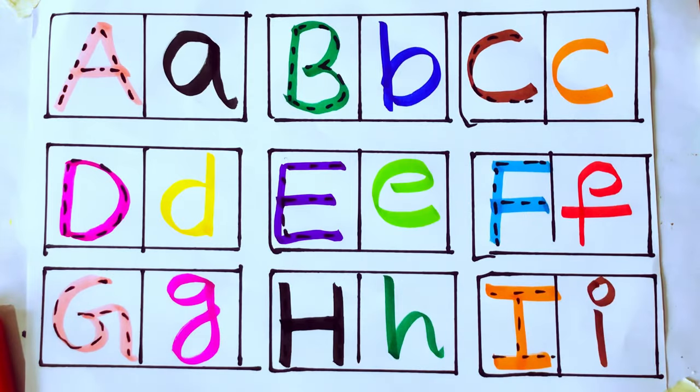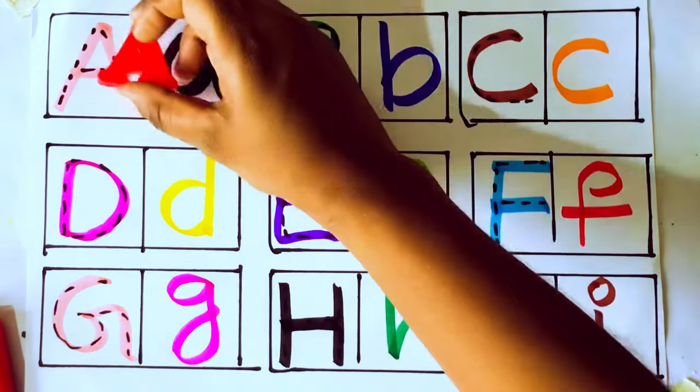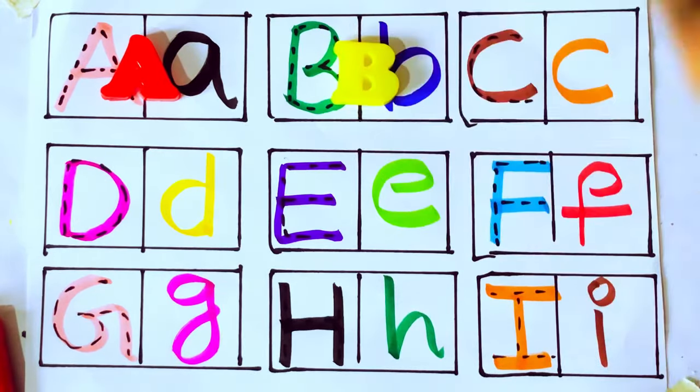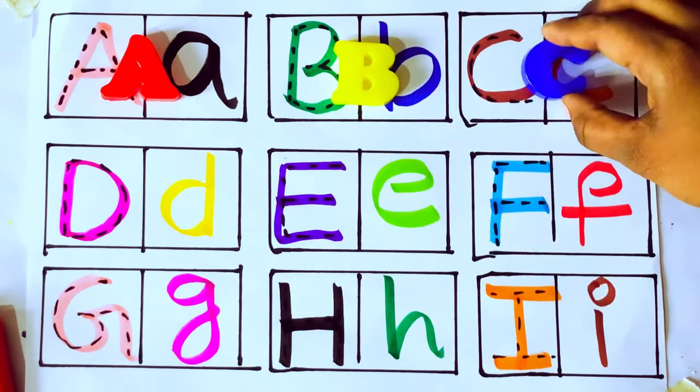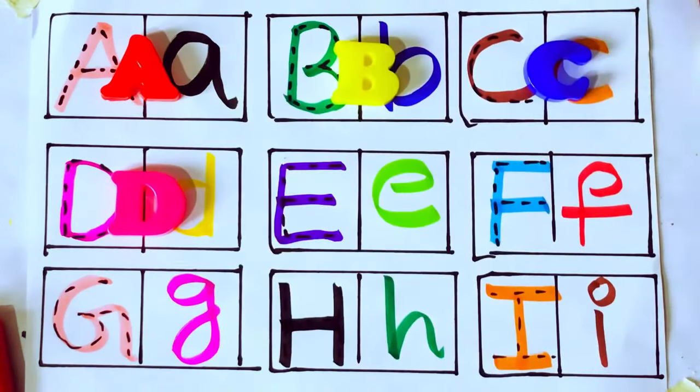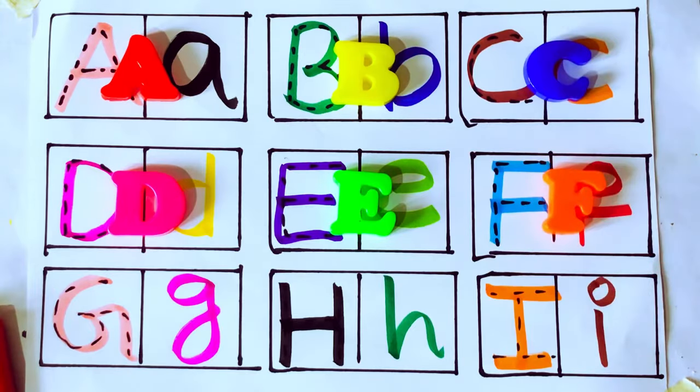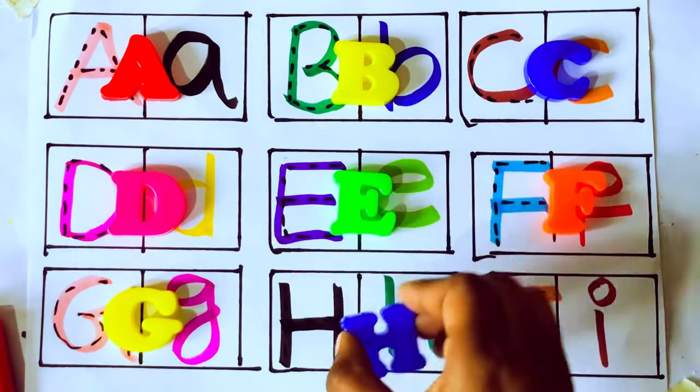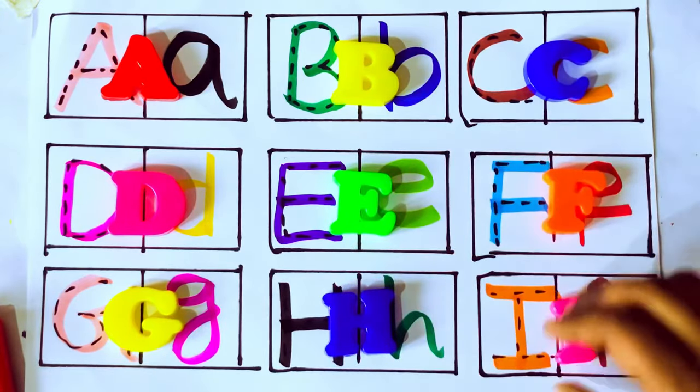Let's name with the toys. A, A for happy. B, B for ball. C, C for cat. D, D for dog. E, E for egg. F, F for fish. G, G for goat. H, H for hat. I, I for ink.